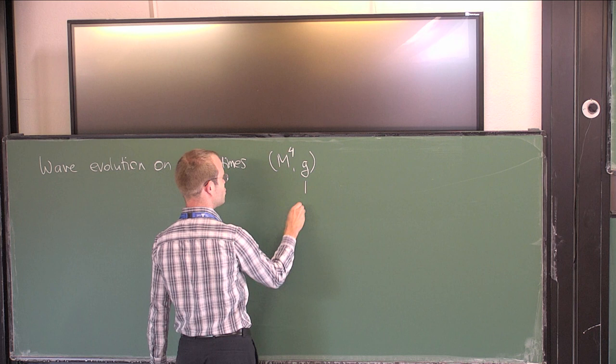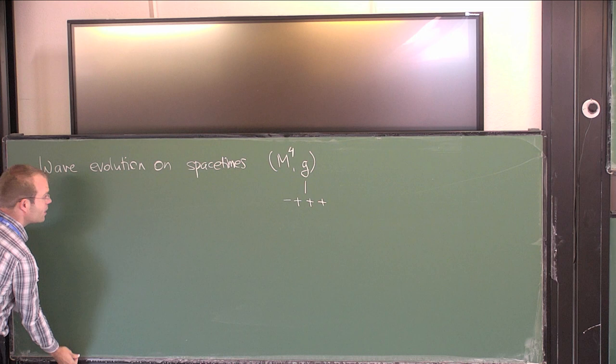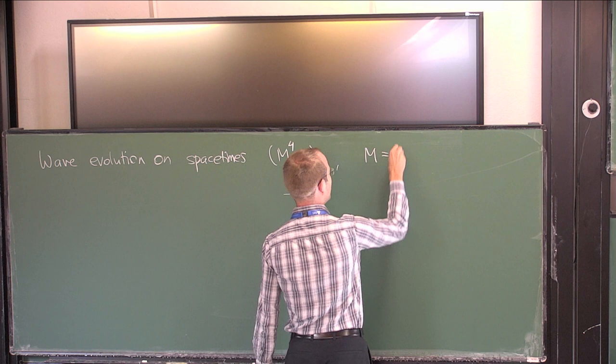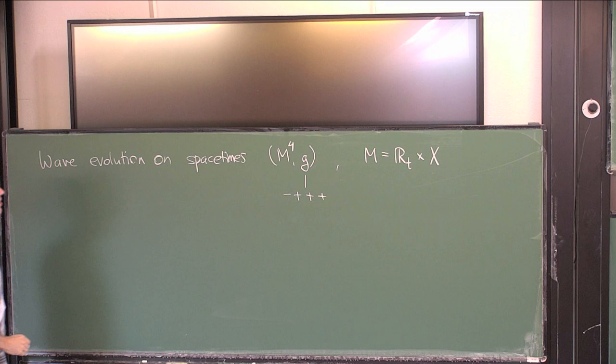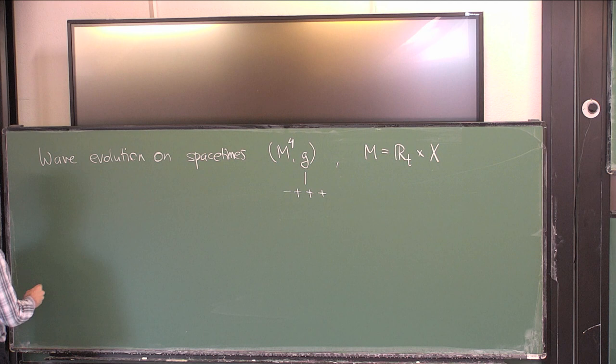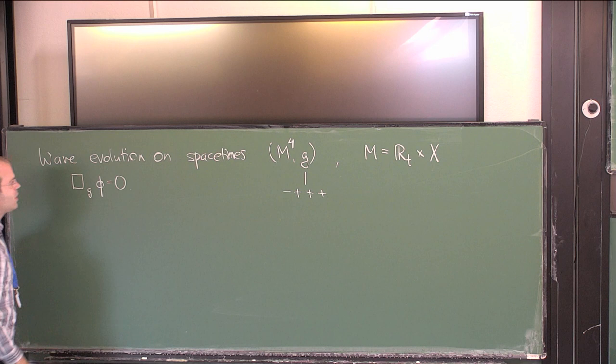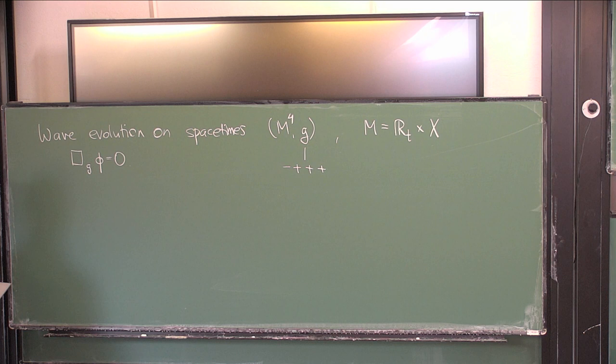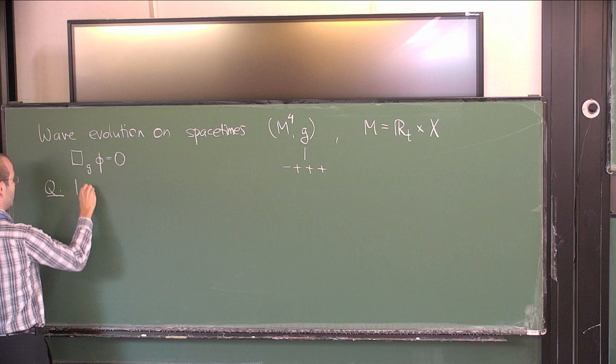I will look at certain four-dimensional manifolds M equipped with a Lorentzian metric G — a Lorentzian metric with a minus-plus-plus-plus signature, and an example will follow in just a second. For the purpose of this talk, M is actually the product of some time direction and a spatial 3-manifold. We look at the wave equation: box φ equals zero, and we're interested in understanding the long-time behavior of this equation for various spacetimes and metrics G.